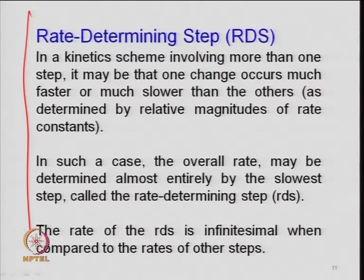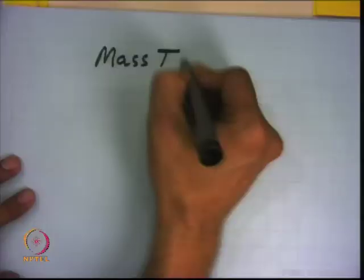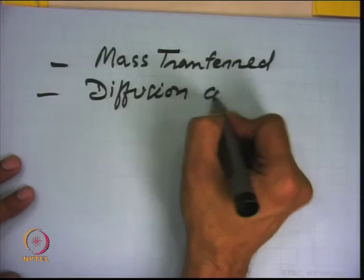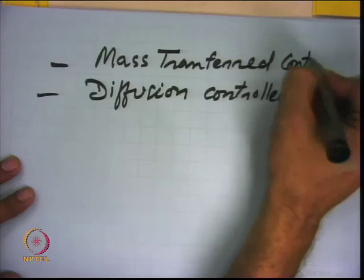The rate-determining step is very crucial. The overall reaction can be: mass transfer-controlled, diffusion-controlled, or chemical reaction-controlled. Among the chemical reaction control steps, there can further be adsorption control, surface reaction control, or desorption control. Right now I am talking about the chemical reaction part, which depends on the active sites present in the catalyst.